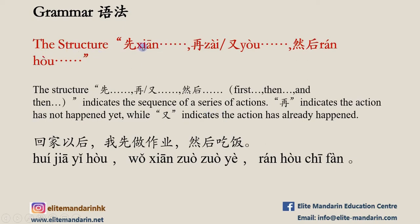The structure 先...再/又...然后 indicates the sequence of a series of actions. Example: 回家以后，我先做作业，然后吃饭。 回家 means 'back home,' 作业 means 'homework.' The sentence means: 'After getting home, I will do my homework first, and then eat.'